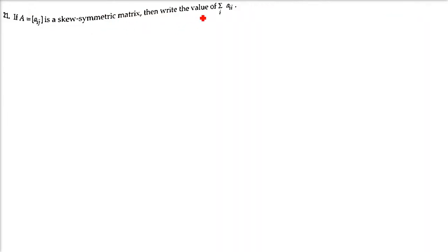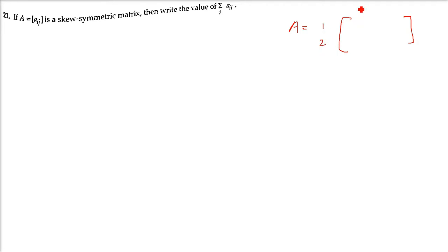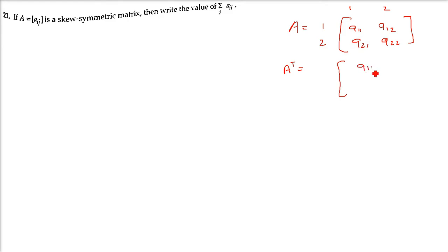Next question: if A with elements Aij is a skew-symmetric matrix, find the value of Σ Aii. Since A is skew-symmetric, let us assume a 2 by 2 matrix with elements A11, A12, A21, A22. Taking the transpose means rows become columns.